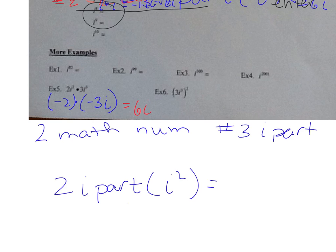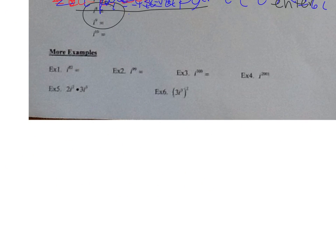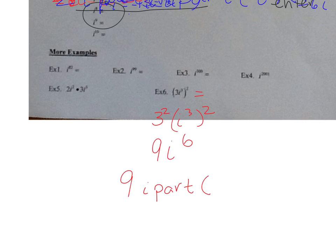Now what about (3i cubed) squared? Remember our rules for exponents — power over product — so it's 3 squared times i to the third squared, which is 9i to the sixth. Using iPart of i to the sixth power, you get negative 9. And that's it — we'll practice more in class tomorrow. Have a good night.